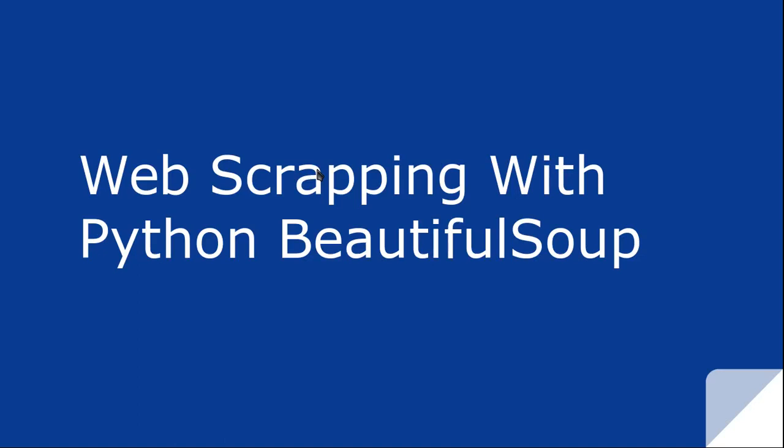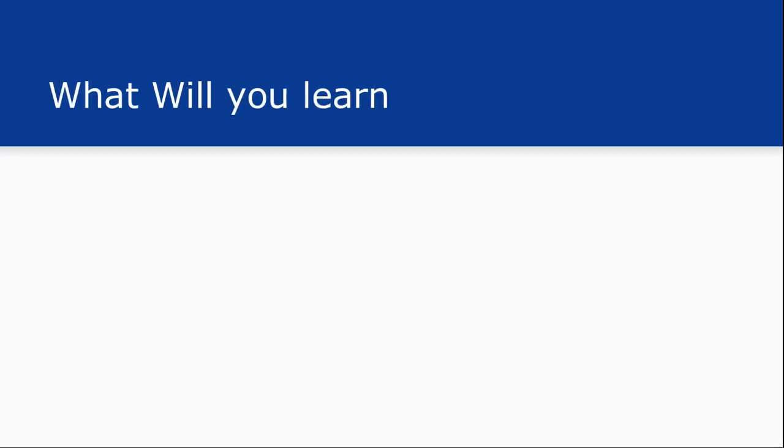Hello friends, this is the second tutorial in the video lecture series on web scraping with Python. In the last lecture we saw how to fetch a remote URL with the help of urlopen function in Python using the urllib module. In this tutorial we'll see how to use the BeautifulSoup library which we installed in the last video tutorial.